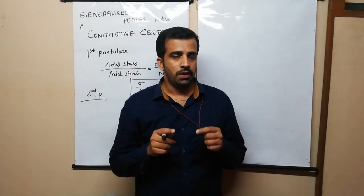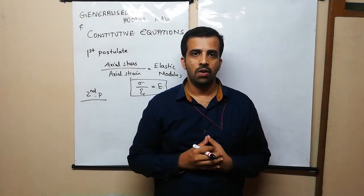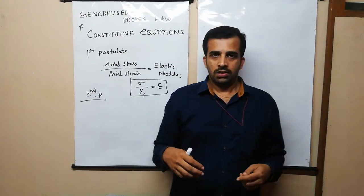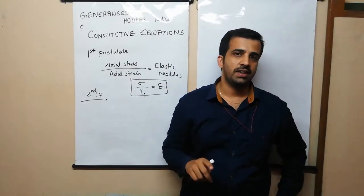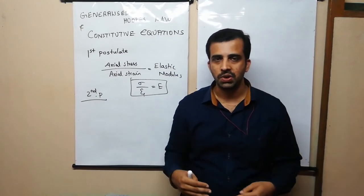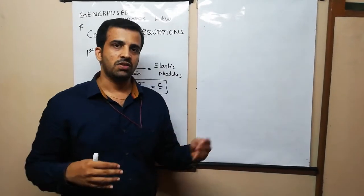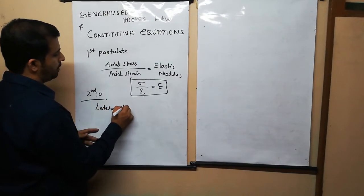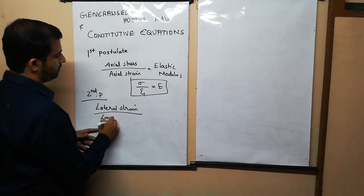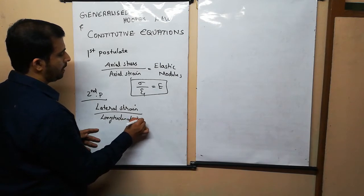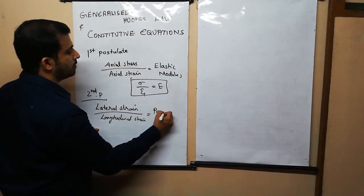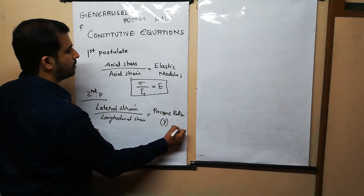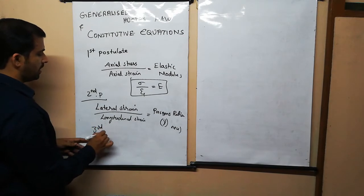The second postulate: suppose you have a steel wire in your hand and you try to elongate it. On elongation, the lateral dimension — that means the diameter — will get reduced and the length will get increased. You will obtain two types of strains: lateral strain and longitudinal strain. The ratio of lateral strain to longitudinal strain gives a constant known as Poisson's ratio, indicated by the letter mu.